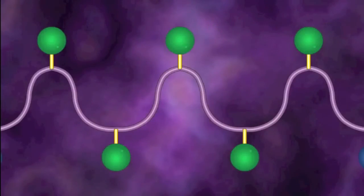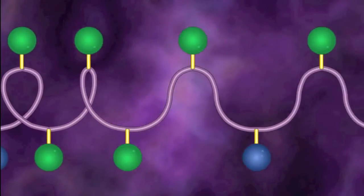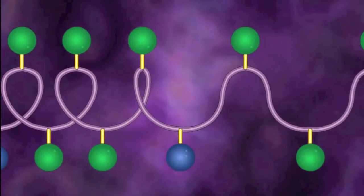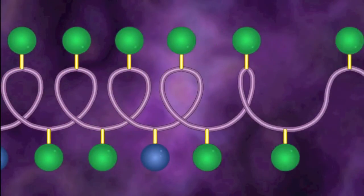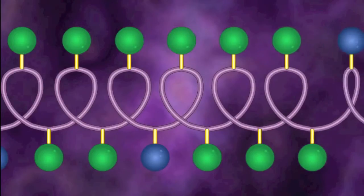Secondary structure is the helix that the protein chain curls into as a result of hydrogen bonds and other weak forces.